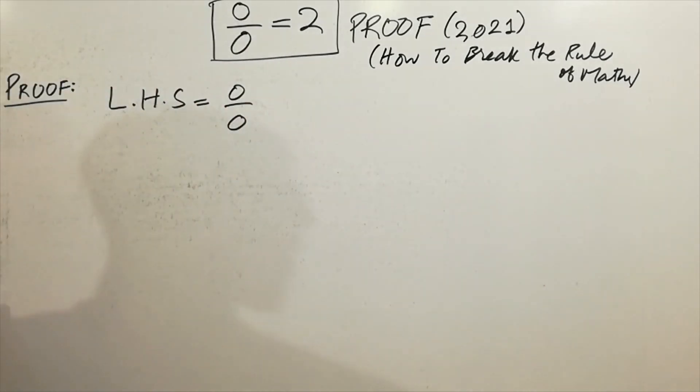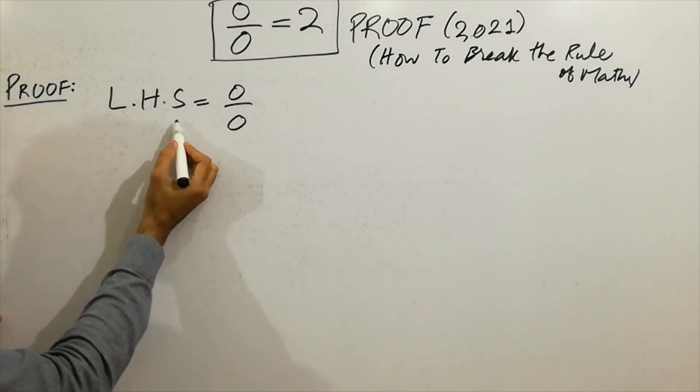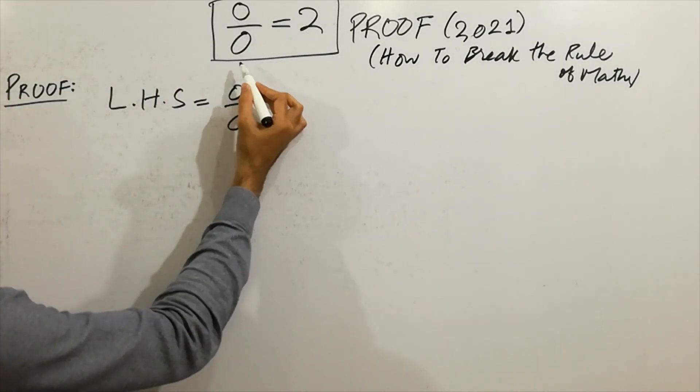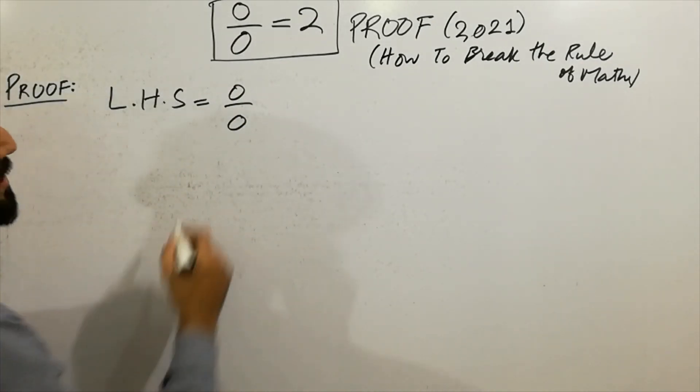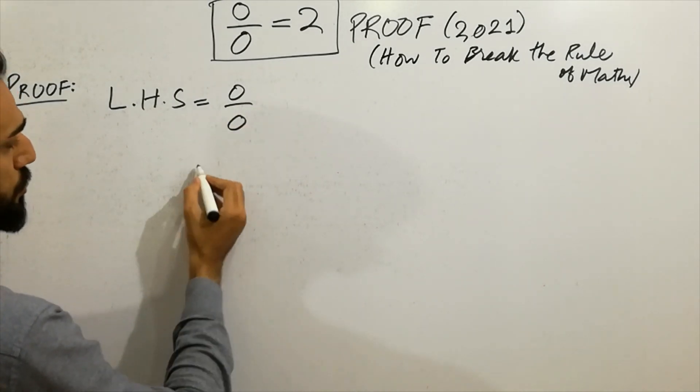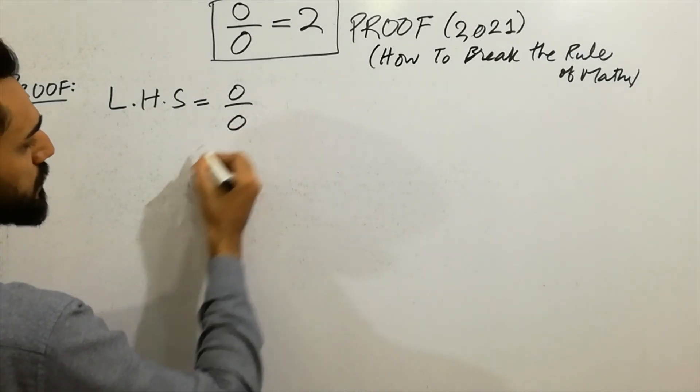So first of all, I have taken here left hand side. I will prove that left hand side always equals right hand side within some seconds. Let's focus on zero. Two variables, zero.